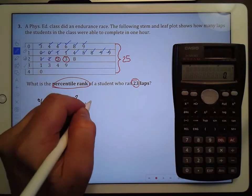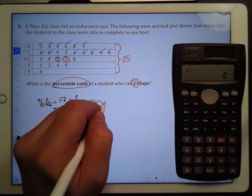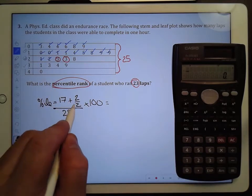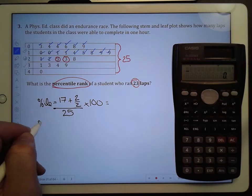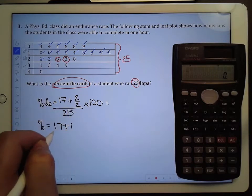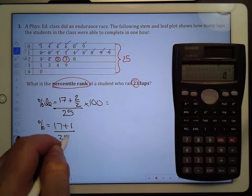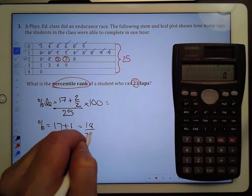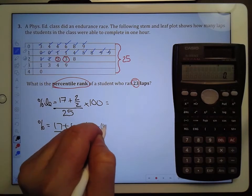And then we're going to take that whole thing, multiply it by 100. So I'll come over to the calculator. I'll take a quick second first just to simplify that fraction. So the percentile is going to be equal to 17 plus 2 divided by 2 is 1 over 25, which is equal to 18 over 25 times 100.